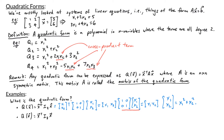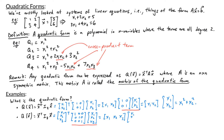If q(x) equals x transpose times I3 times x, since the matrix of the quadratic form is the 3 by 3 identity matrix, x has to be a three-dimensional vector, say [x1, x2, x3]. When I multiply the identity matrix to x, I just get x back. So I'm left with x transpose times x, which gives x1 squared plus x2 squared plus x3 squared.